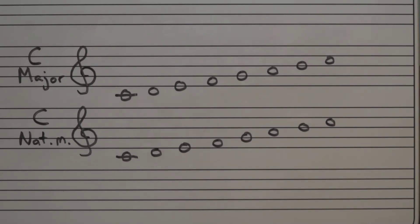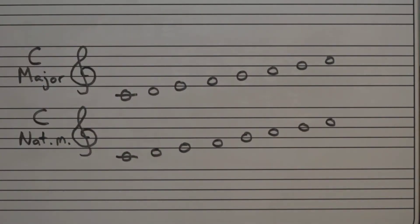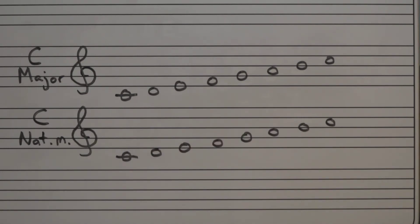We're simply just going to take this C major scale, which you've been practicing and can play very well, and use those notes to create a C natural minor scale. And it's done very easy by just changing three notes.